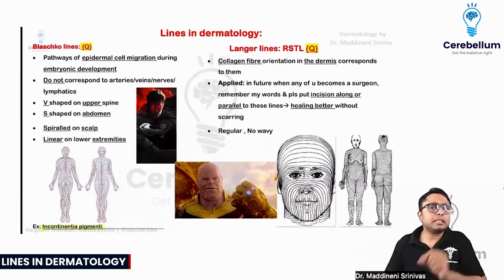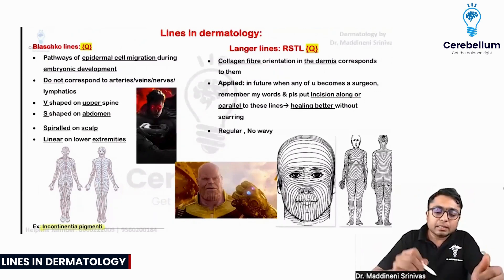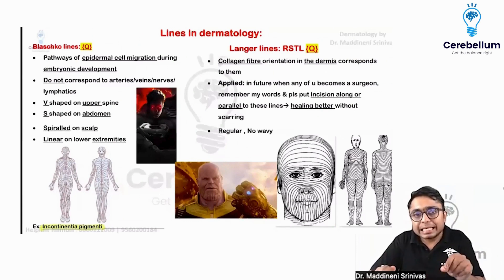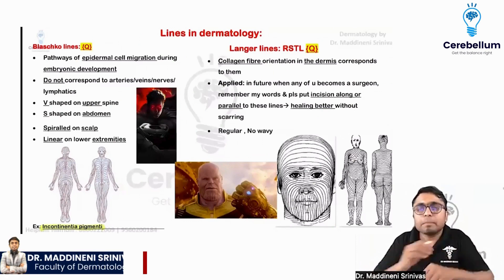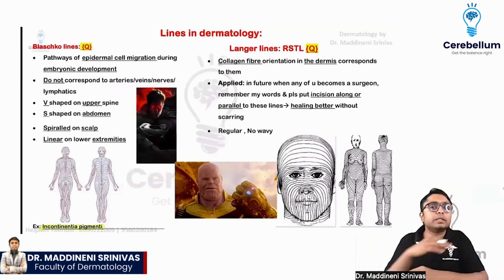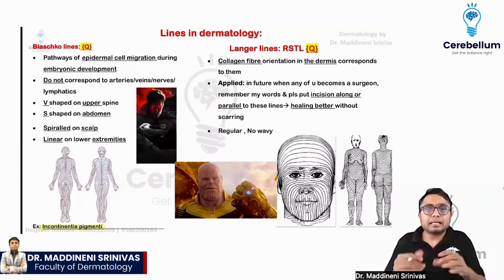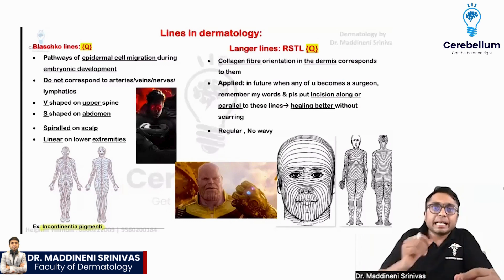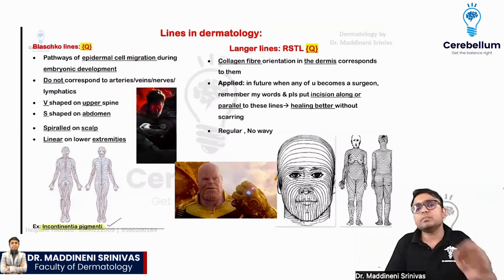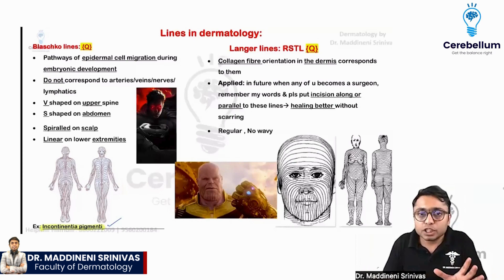Incontinentia pigmenti is the key disease. You can remember Blashko's lines as the pathways along which, during embryonic development, the epidermal cells are going to follow. They are going to migrate over the skin, and these migratory pathways become visible when there is any disease which follows Blashko's lines — that disease being incontinentia pigmenti.